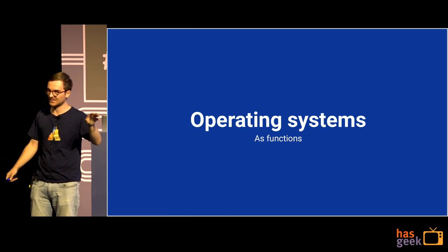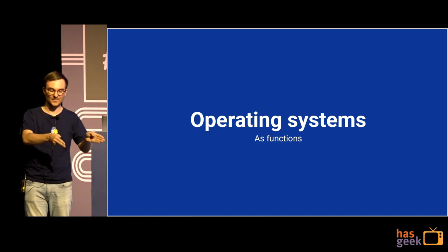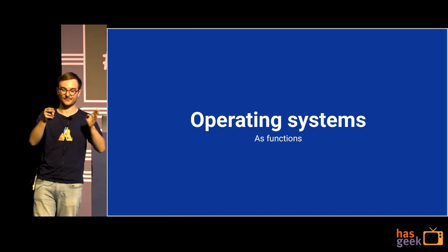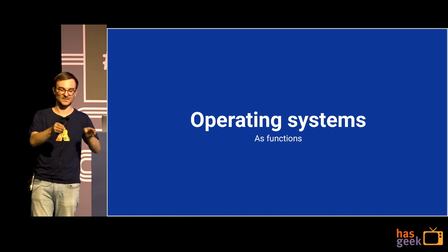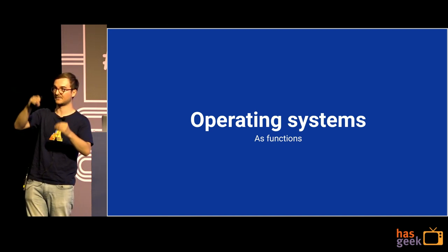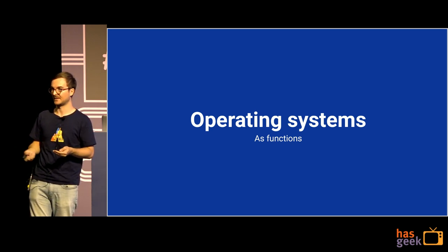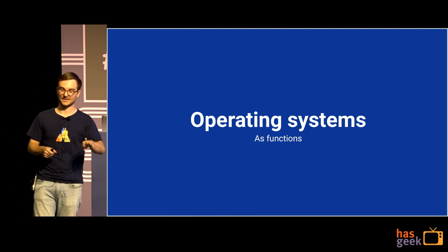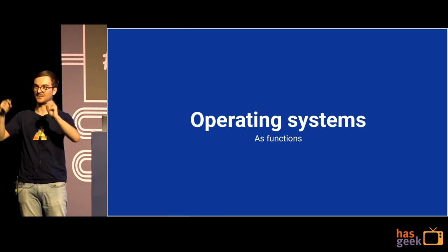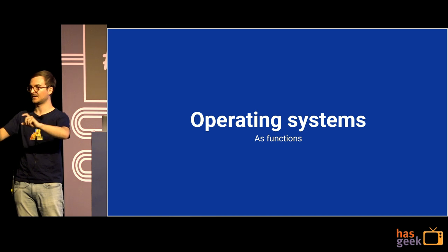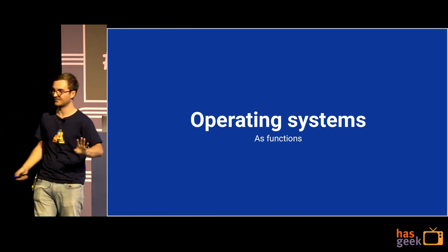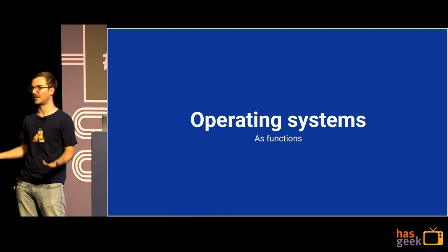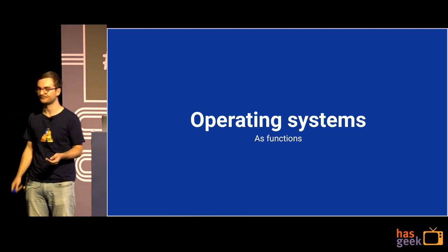Now let's talk about how to apply the idea of functions to operating systems. We've got the idea of functions: same input, same output. There are two levels: for the expression language, the same values provided to functions should always return the same value — calling mkDerivation with the same things always gives the same output and always serializes the same file on disk. The second level is that when you go to realize the derivation — once you've got that build definition on disk — realizing it twice should always give you byte-for-byte the same artifact. Now we can apply that same idea to operating systems.